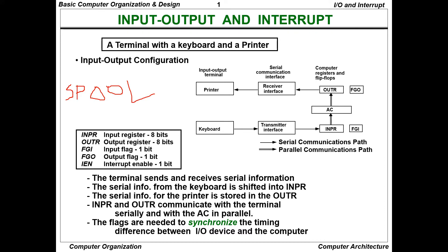So first we will see the input-output configuration. First we have a keyboard, which is our input device. From keyboard, we have a transmitter interface. So what is a transmitter? It transmits the information. And what is the receiver? It receives the information. So for input configuration, we have a keyboard and transmitter interface. For output configuration, we have a receiver interface and a printer, which is the output.